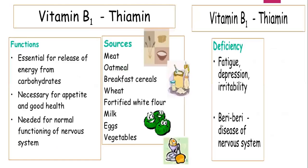Vitamin B1, also called thiamine, helps in digestion and proper functioning of the heart and nerves. The deficiency disease caused by thiamine is beriberi. Sources include grains like rice and whole wheat, green leafy vegetables, peas, meat, and oatmeal. Symptoms include weak muscles, low energy, weak nerves, patches on the skin, and swelling of the hands and feet. Beriberi mainly affects the nervous system, and other symptoms include weakness, eye irritation, and skin and intestinal disorders.